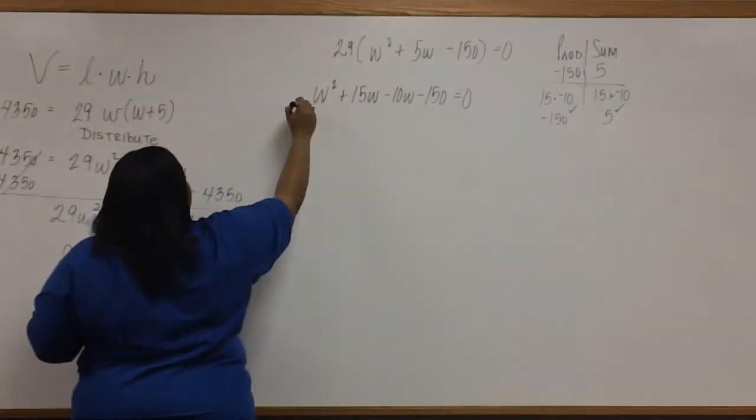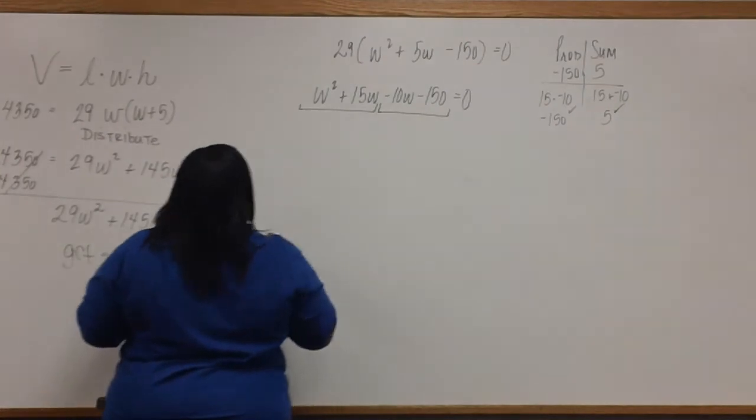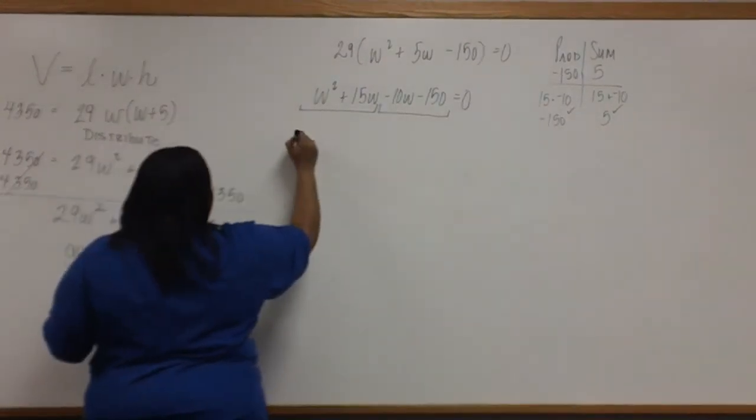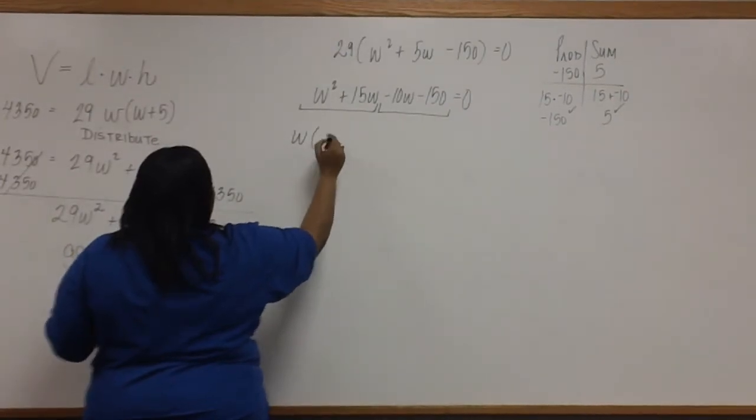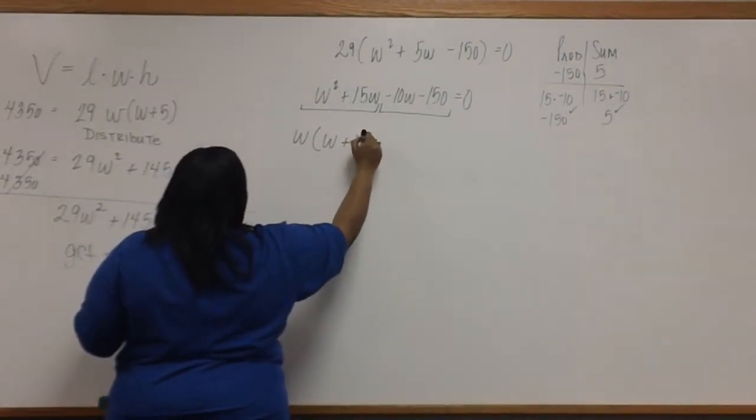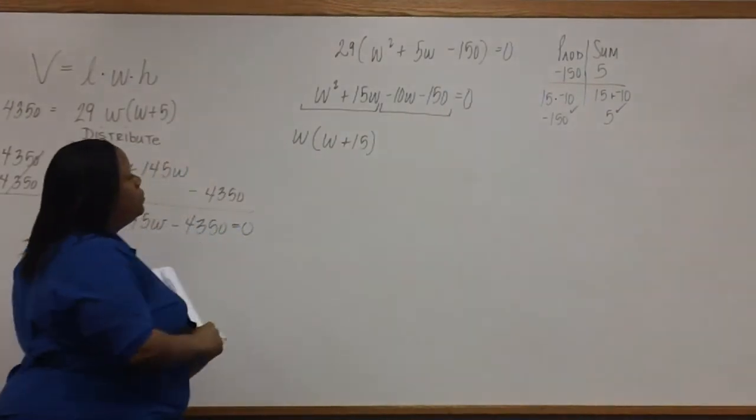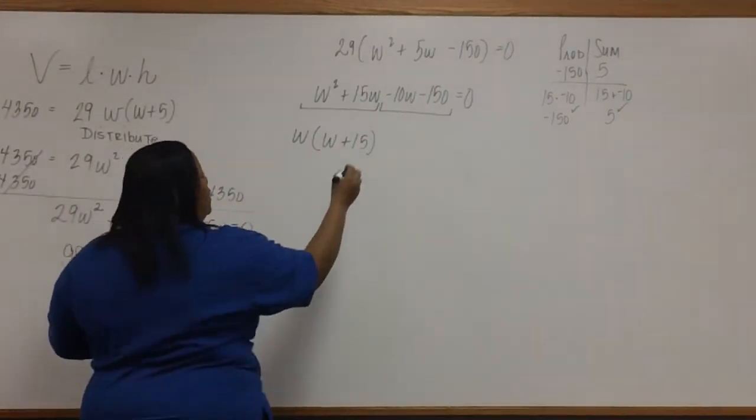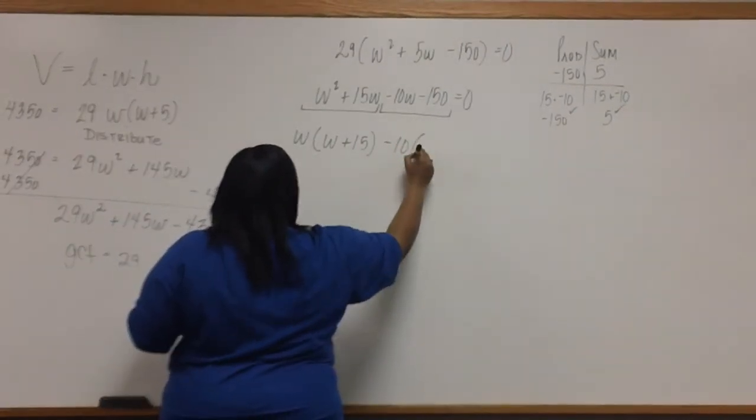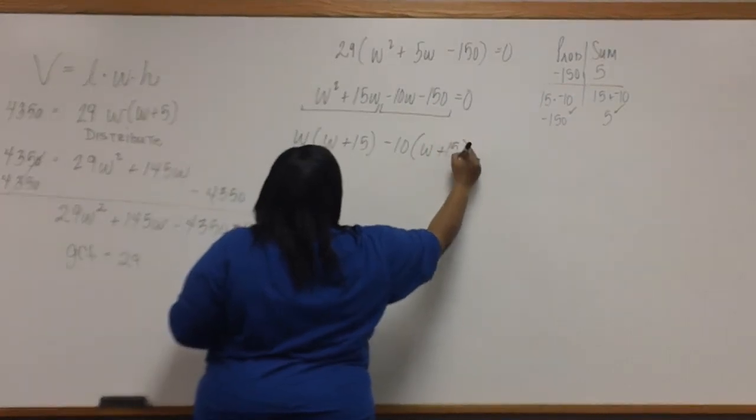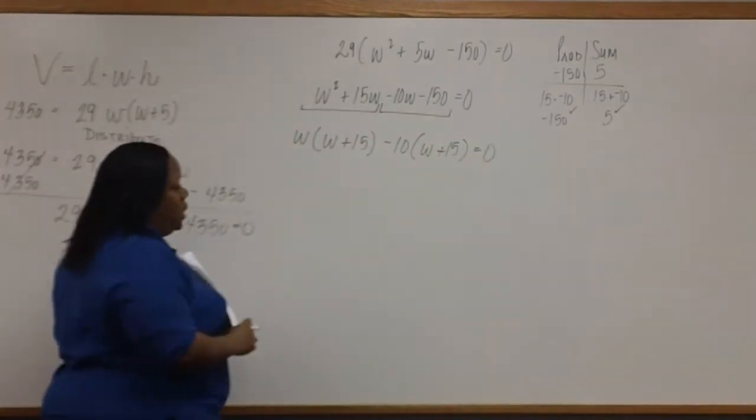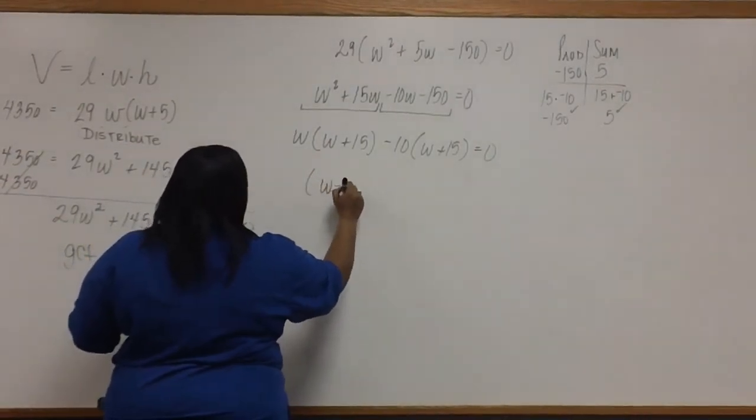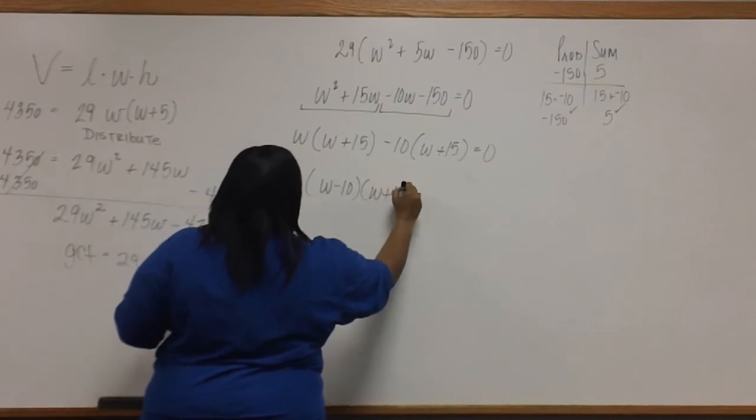Now we're ready to factor by grouping. The GCF in the first group is W. And left inside the parentheses is W plus 15. The GCF from the second group is negative 10. And we're left with W plus 15. And this is still also equal to zero. Now we can write our factorization as W minus 10 times W plus 15.